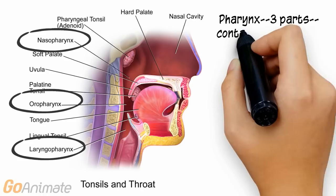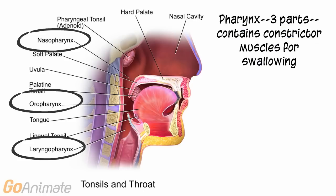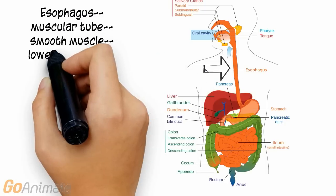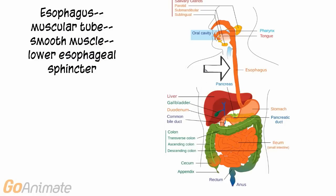The pharynx consists of three parts. The upper part is called the nasal pharynx, the middle section is called the oral pharynx, and the lower section is the laryngopharynx. The pharynx contains constrictor muscles that function in swallowing.